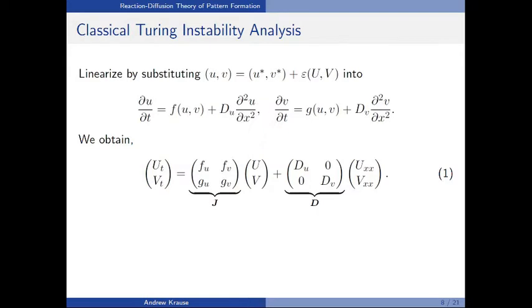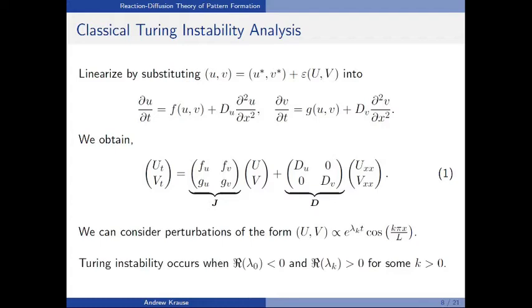I won't go into the theoretical details, but you can justify ansatzes of this form. These perturbations now grow or decay exponentially in time, depending on the real part of lambda k, and they're modulated in space by cosines, which are eigenfunctions of the Laplacian. From this, you can say if the spatially homogeneous system is stable, can you find an instability of one of these eigenfunctions? Can you find parameters which allow one of these spatial modes to grow in time, but the spatially homogeneous system to remain stable? This is what we refer to as a Turing instability.